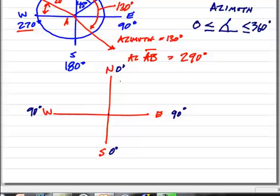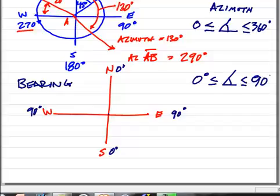but in bearing, our angular range is going to be zero degrees to 90 degrees, because everything stays in its own quadrant. So let's think about this.